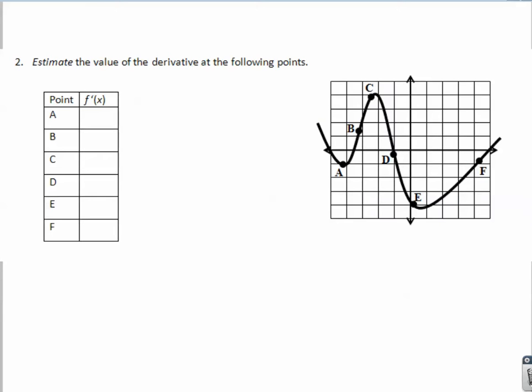Last one. Estimate the value of the derivative for the following points. Every time you see the derivative, translate in your head to slope. Slope of the tangent line. Which means, let's draw tangent lines at those points. At A, draw a tangent line. Touching is tangent. That looks like it has a slope of zero.